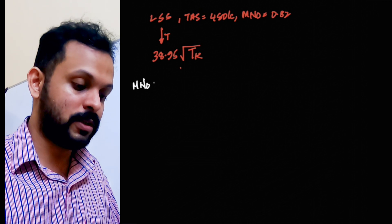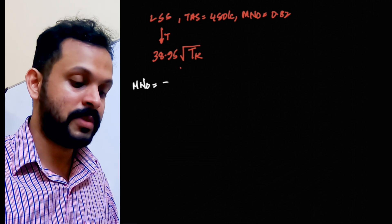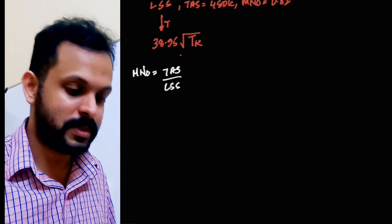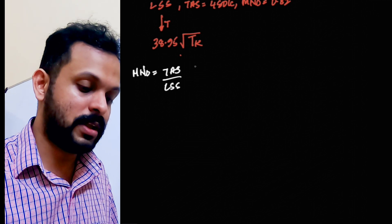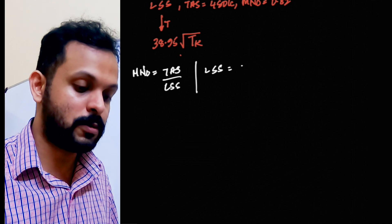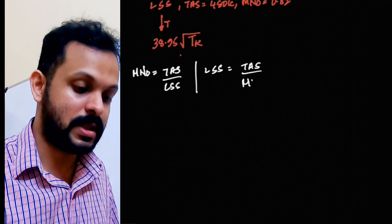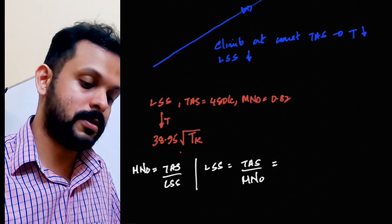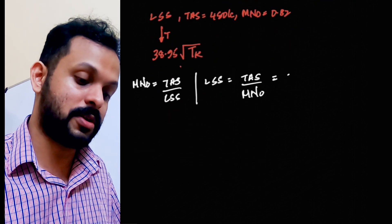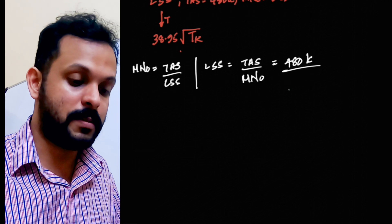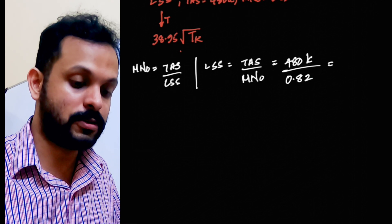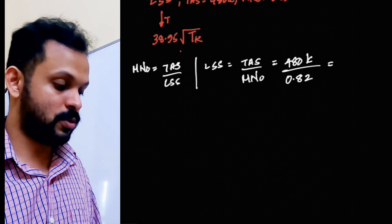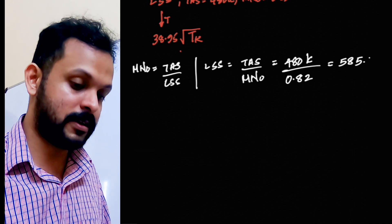So, Mach number, let me put the equation once again for you to revise in your mind. Mach equals TAS by LSS. Now, from here, we can find out the local speed of sound. LSS is equal to true airspeed divided by Mach number. The true airspeed is 480 knots divided by Mach number, and the question is given as 0.82. Let's compute this real quick. 480 divided by 0.82 will give you 585.36.